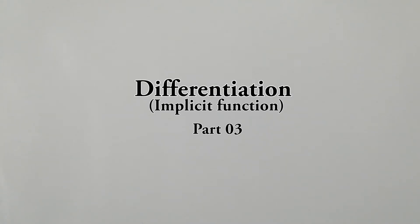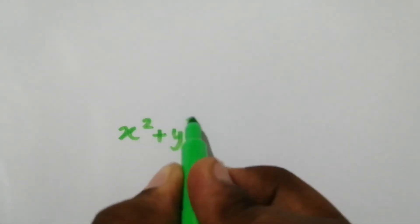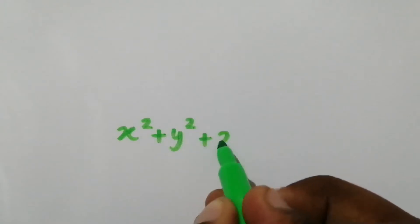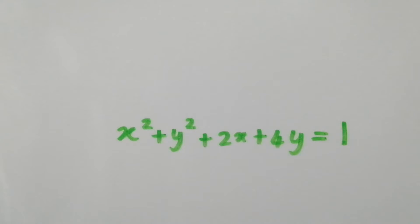I am going to give an introduction to the implicit function. The functions which cannot be expressed as a unique function of x are known as implicit functions. For example, x squared plus y squared plus 2x plus 4y equals 1. In here, if y is the function, we cannot express y as a unique function of x.